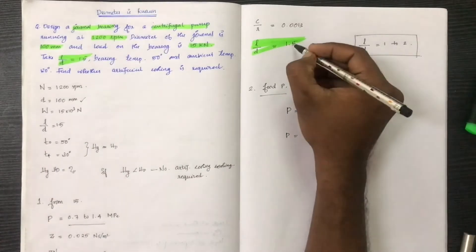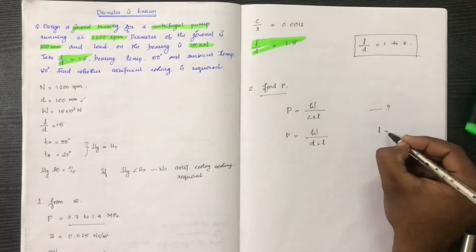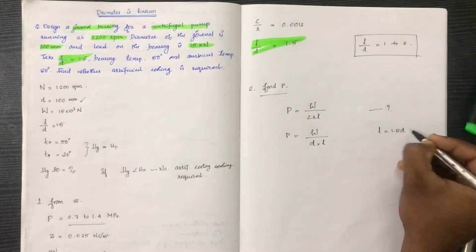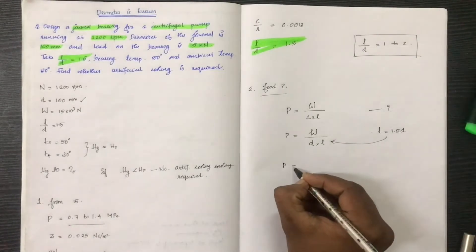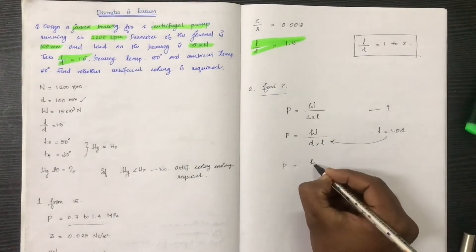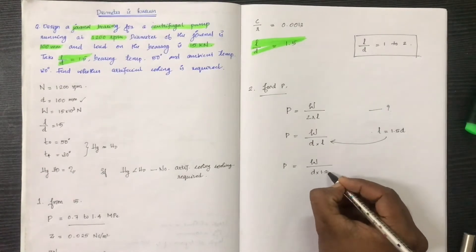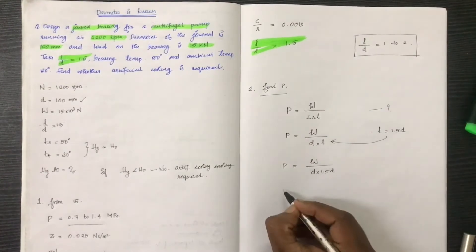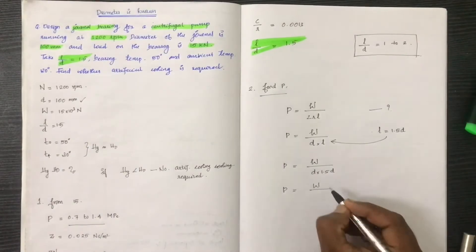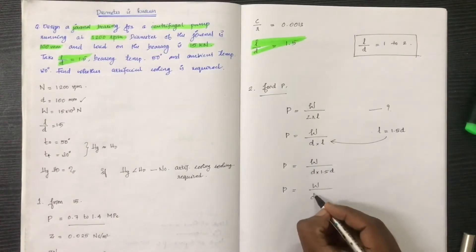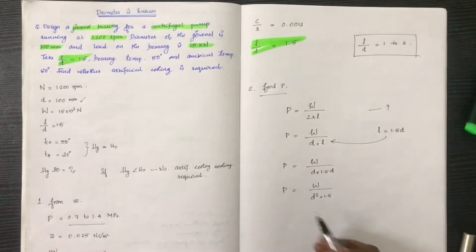L is equal to 1.5 into D. Substituting: P is equal to W divided by D into 1.5 into D, which gives W divided by 1.5 D².